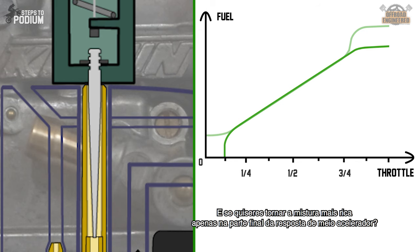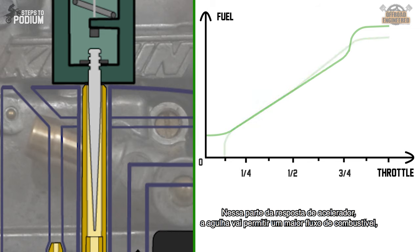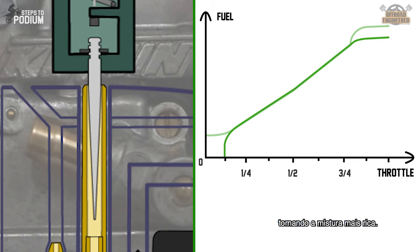What if you just want to make it richer on the higher part of the mid throttle response? Just install a needle with a thinner tip. On that throttle range, the needle will allow more fuel through the needle jet, making the mixture richer.